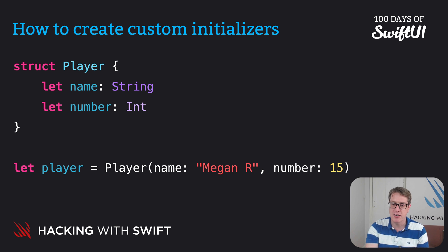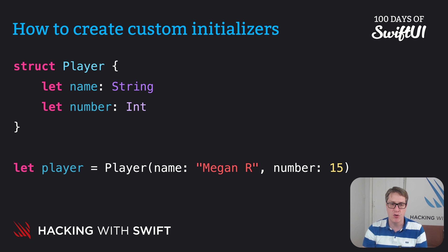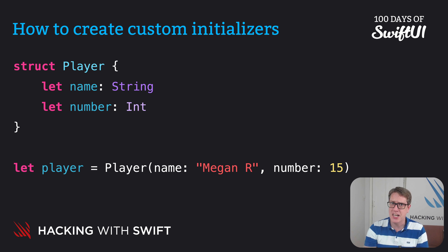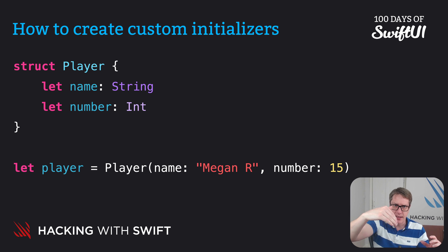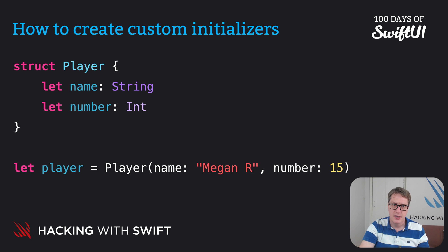This kind of code is possible because Swift silently generates an initializer for us, accepting those two values. But we could write our own to do exactly the same thing. The only catch is you must be able to distinguish between the names of parameters coming in and the names of properties inside your struct. Here's how it would look.